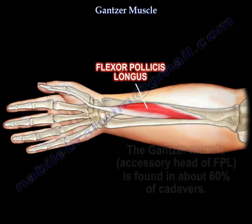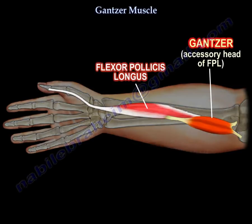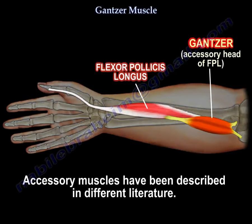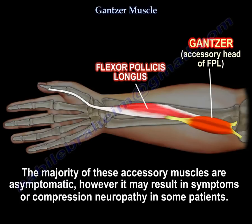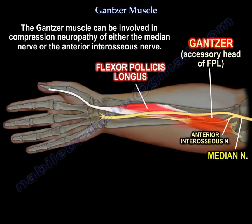This muscle is an accessory head of the flexor pollicis longus and is found in about 60% of cadavers. Accessory muscles have been described in different literature. The majority are asymptomatic; however, it may result in symptoms or compression neuropathy in some patients. The Gantzer muscle can be involved in compression neuropathy of either the median nerve or the anterior interosseous nerve.